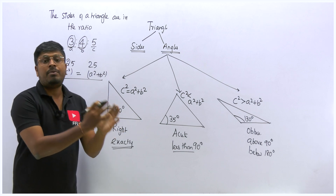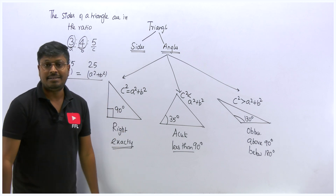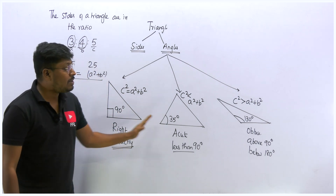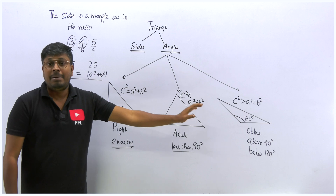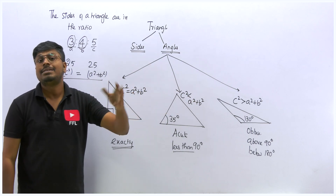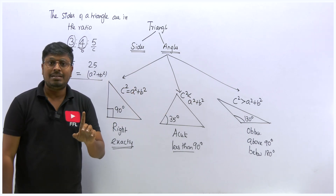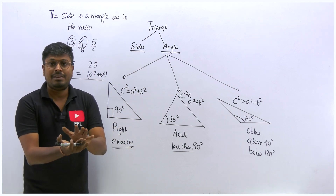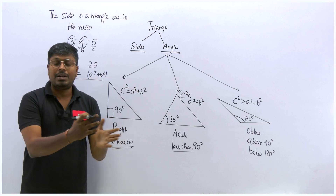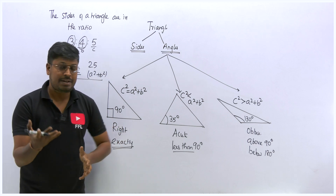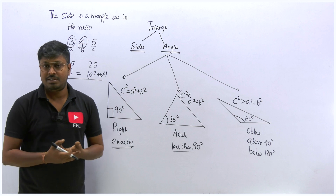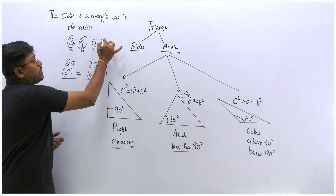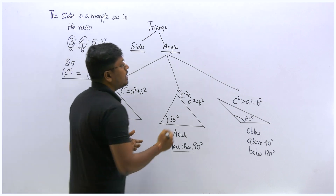This is most important for competitive exams. Everyone knows the types of triangles, but identifying which triangle is formed using the given sides is the key skill. In childhood, we had a compass and protractor to measure angles directly, but in competitive exams we don't have those tools, so we must apply this formula.